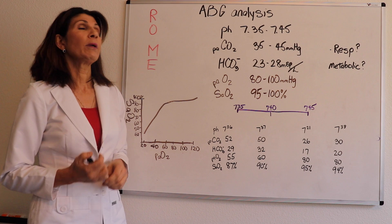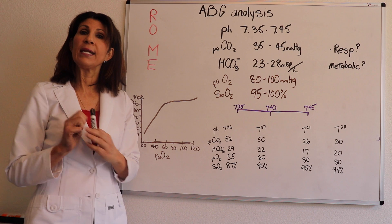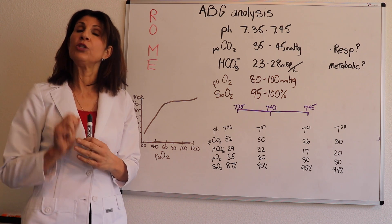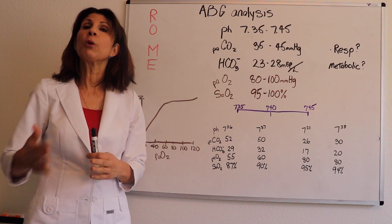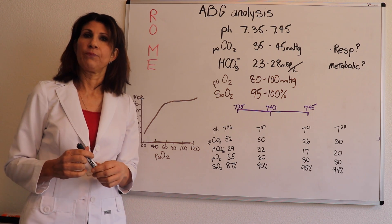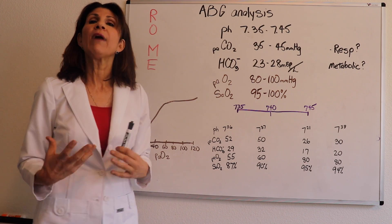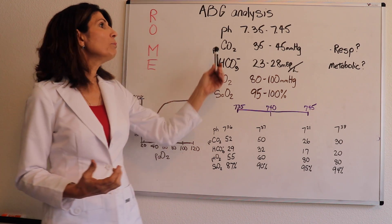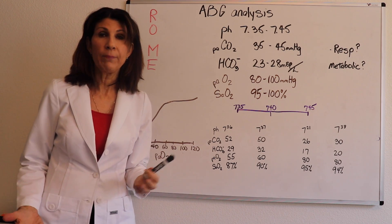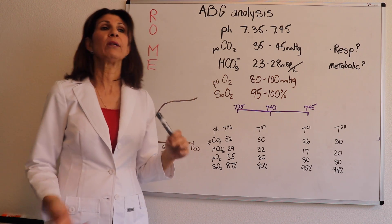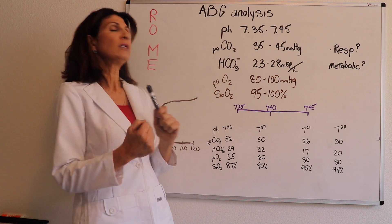So what is it that the pH represents? The pH is actually the number of hydrogen ions in the arterial blood. So this is a very important concept because the definition of an acid is that it's a hydrogen ion donor. So the more hydrogen ions there are, the more acidic something is.